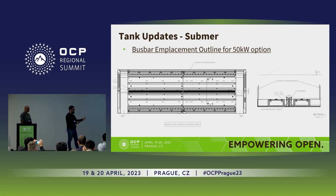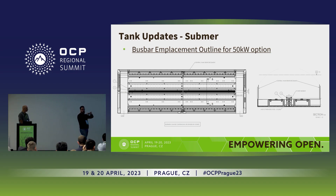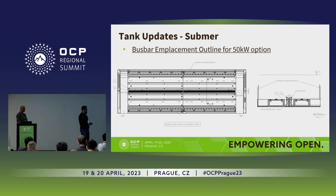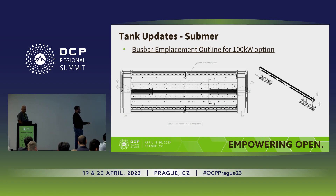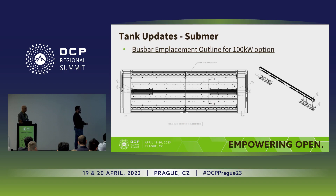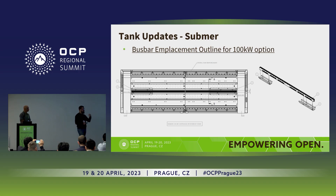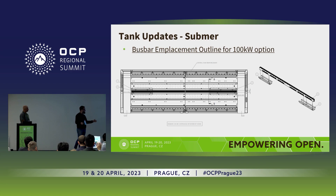The bus bar is in a very good position because natural convection brings cold fluid up from the bottom, and at the top it moves to the sides where it's warm — so the bus bar is always well-cooled and stable in temperature. For 100-kilowatt density in one tank, the bus bar attachments are designed so that no weight from power shelves or servers rests on the bus bar. Everything rests on the sides of the tank, with just a clip connecting to the bus bar for good electrical contact.